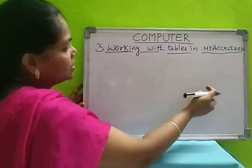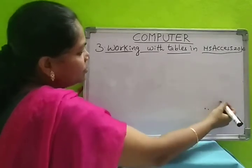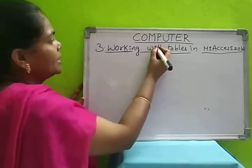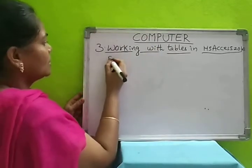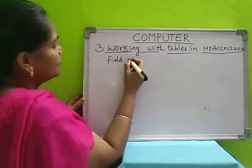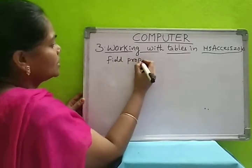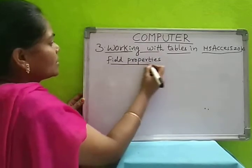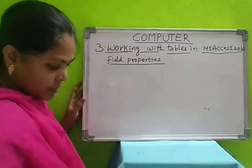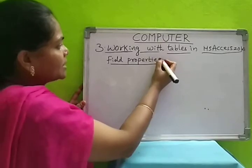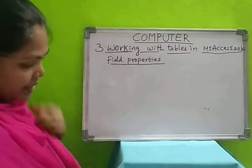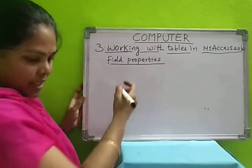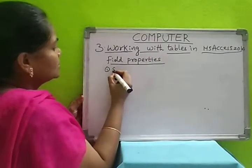A field property defines the appearance or behavior within a database. In design view, below the field grid pane you can select different field properties. What are the different field properties? First one is field size. You can set the size of the field — that is, for a number you need some 1 byte or 2 bytes. You can set how much memory you want and mention that in the size.